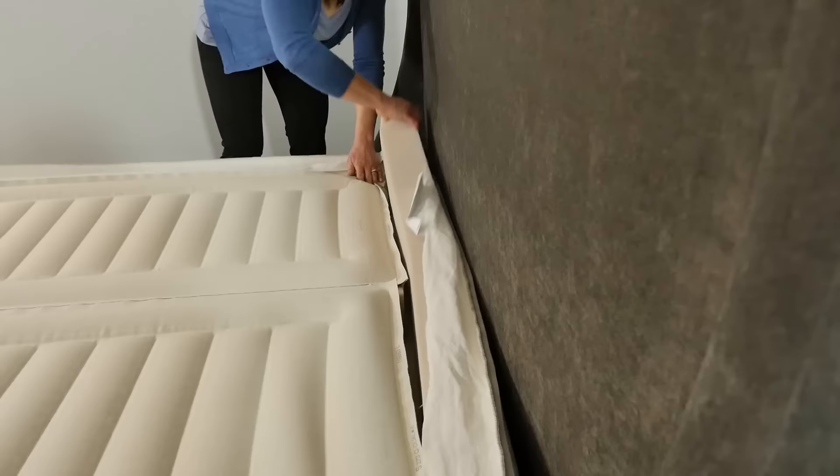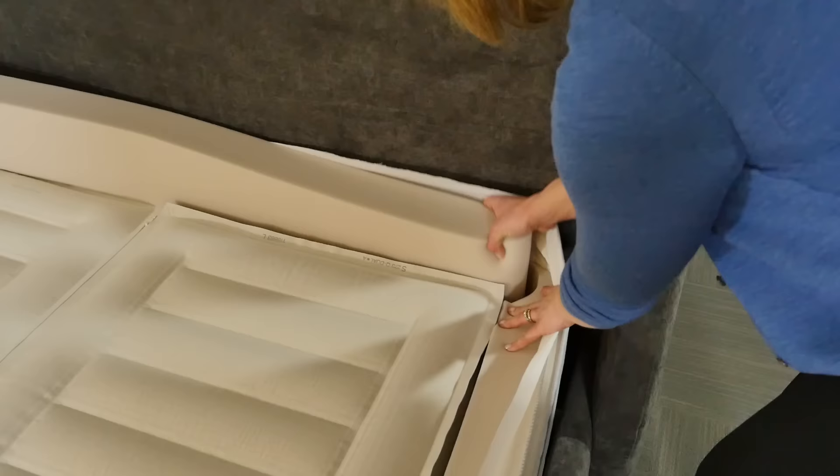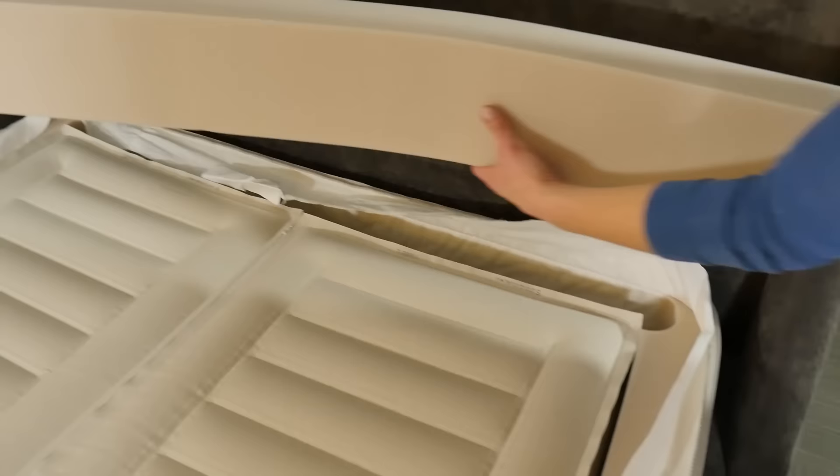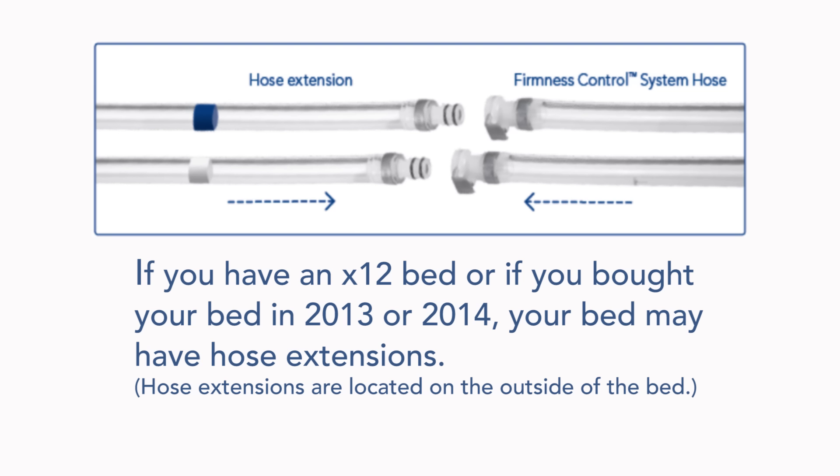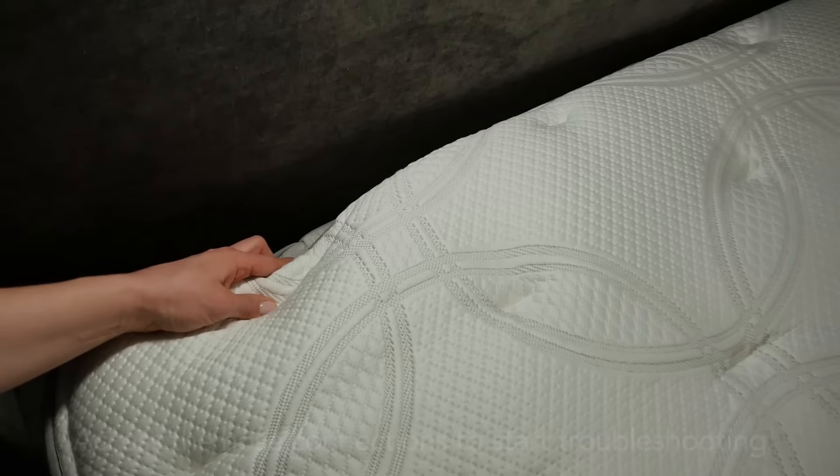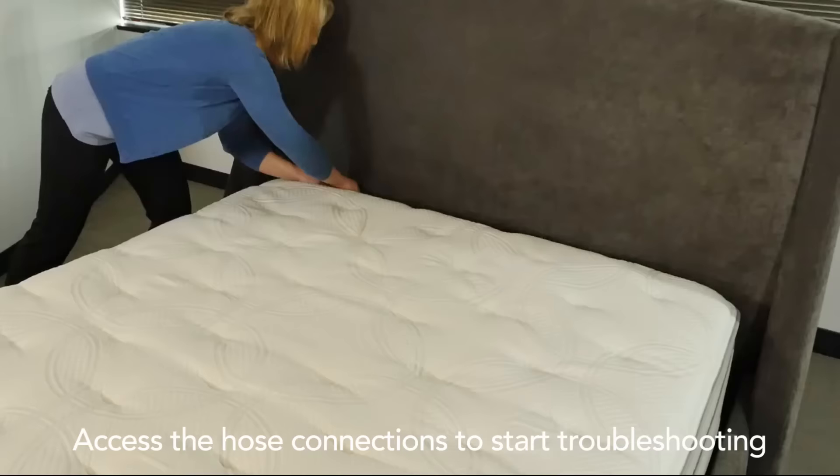For most beds, hose connections are accessed by opening the bed. Some of our mattresses come with hose extensions which allow you to access the hose connections without opening the bed. First, unzip the removable cover. The zipper is located at the head of the bed.